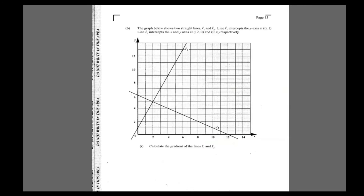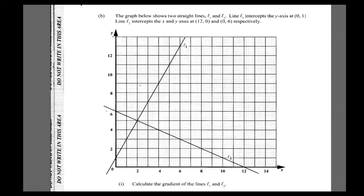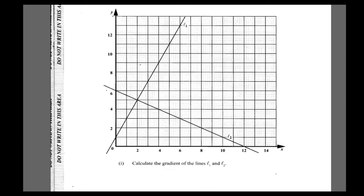Now question 4 part b — we're on to coordinate geometry. The graph shows two lines, L1 and L2. L1 intersects the y-axis at (0, 1), and L2 intersects the x-axis and y-axis at (12, 0) and (0, 6). Find the gradients of L1 and L2.